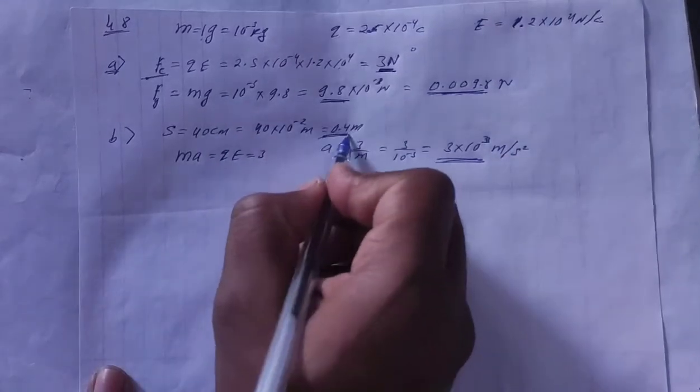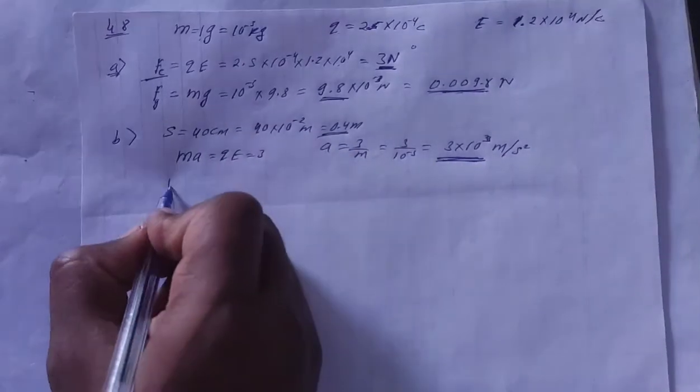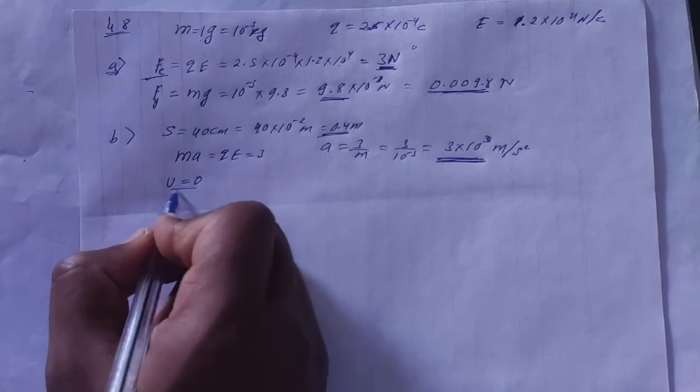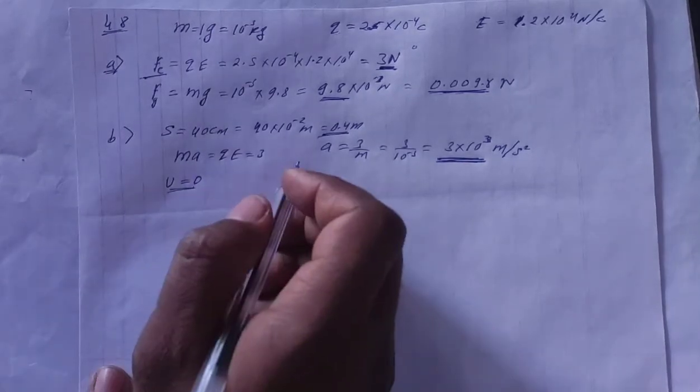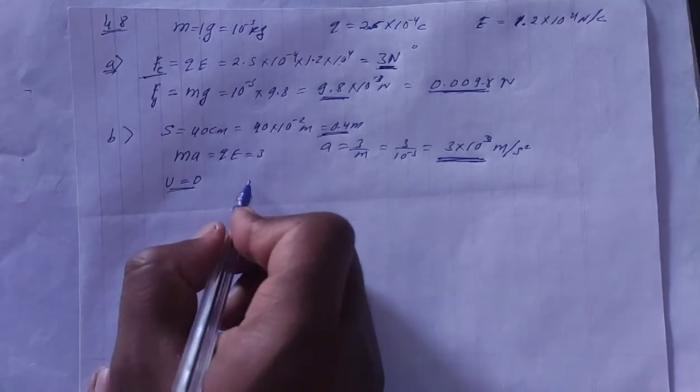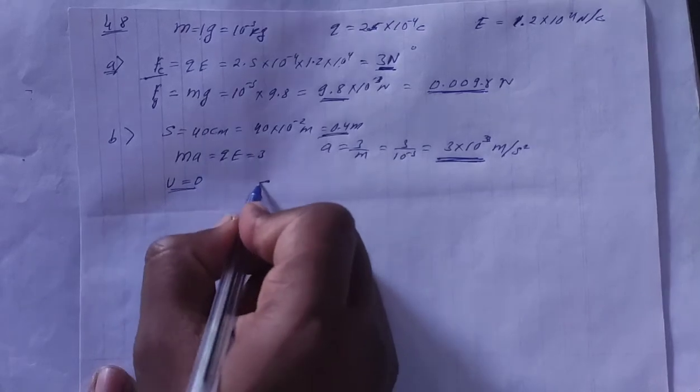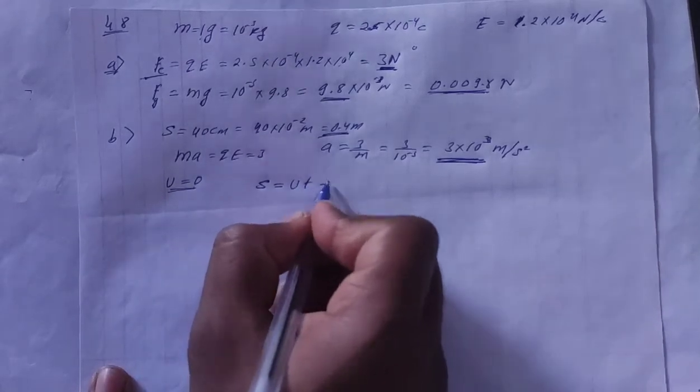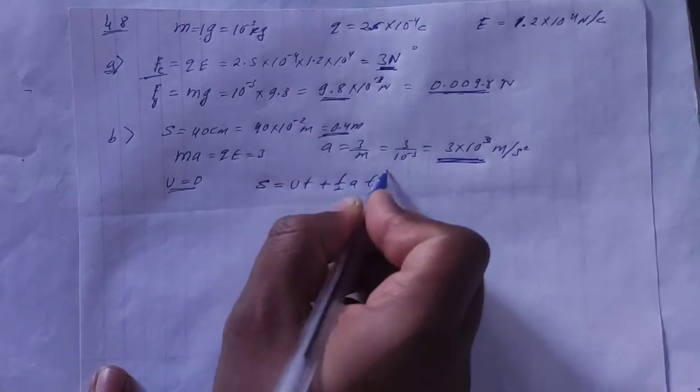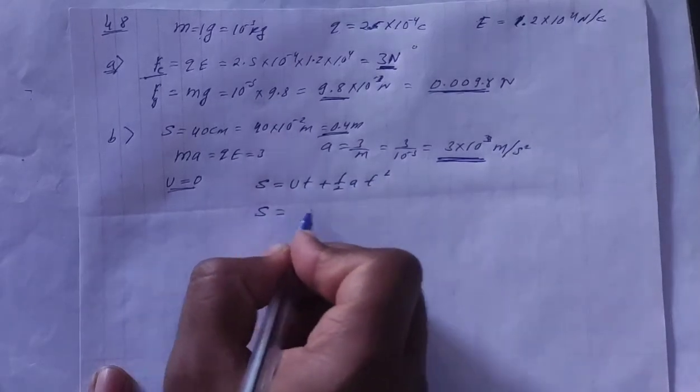So A is equal to 3 by M, that is 3 by 10 to the power minus 3, which is 3 into 10 to the power 3 meter per second square. This is your acceleration. We have displacement, we have acceleration, and initial speed is zero because it's released from rest.